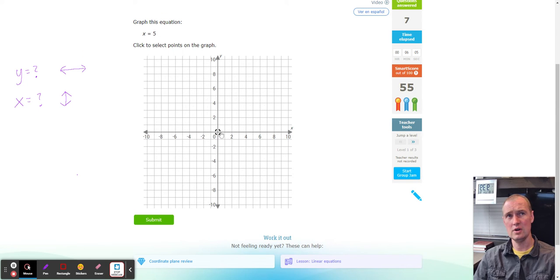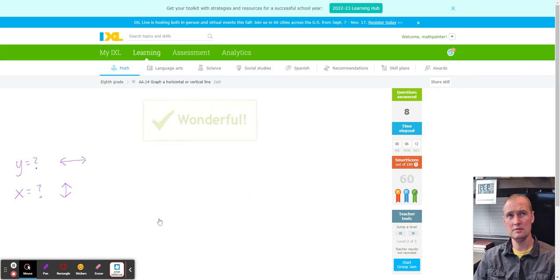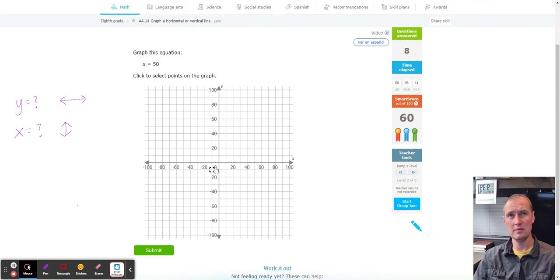Next up, X equals five, one, two, three, four, five. Again, vertical. Next up, X equals five. Ooh, nevermind. X equals 50. I forgot that zero there.